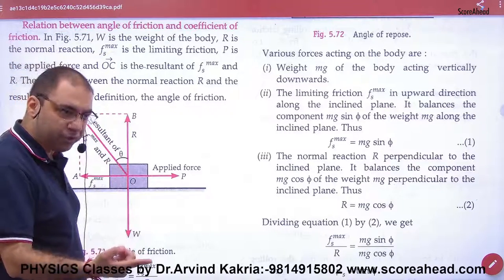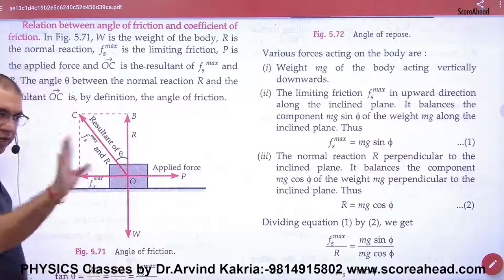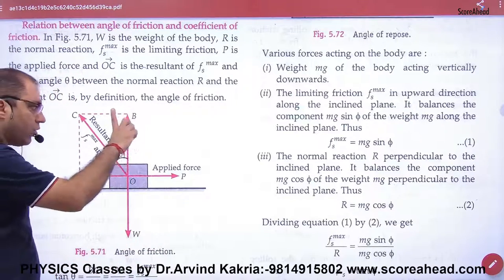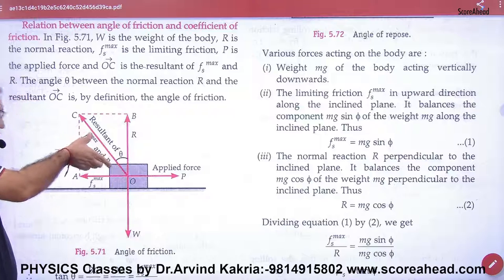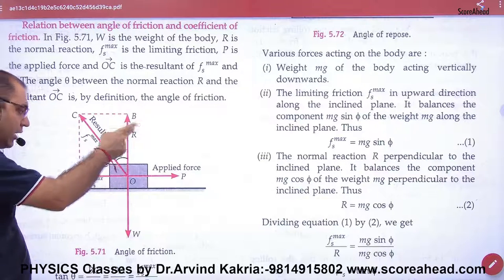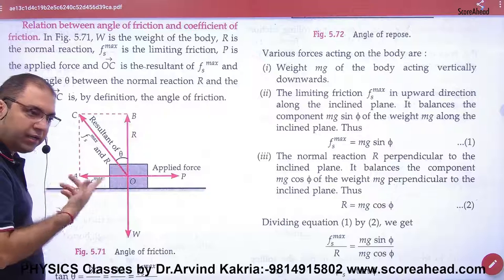Theta. It is called angle of friction. So angle of friction, that is the angle that the body's normal reaction makes with the resultant, R. And whose resultant? R and maximal static friction.